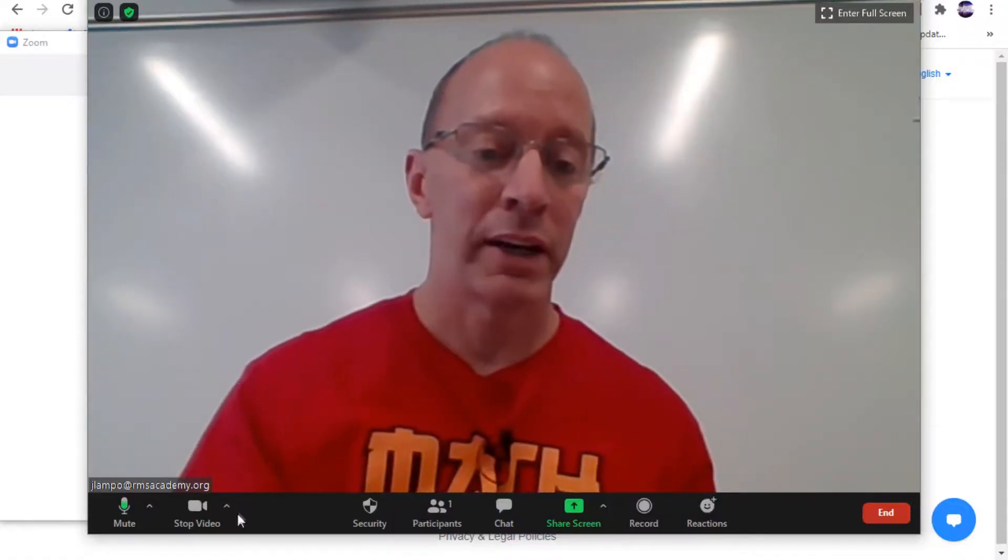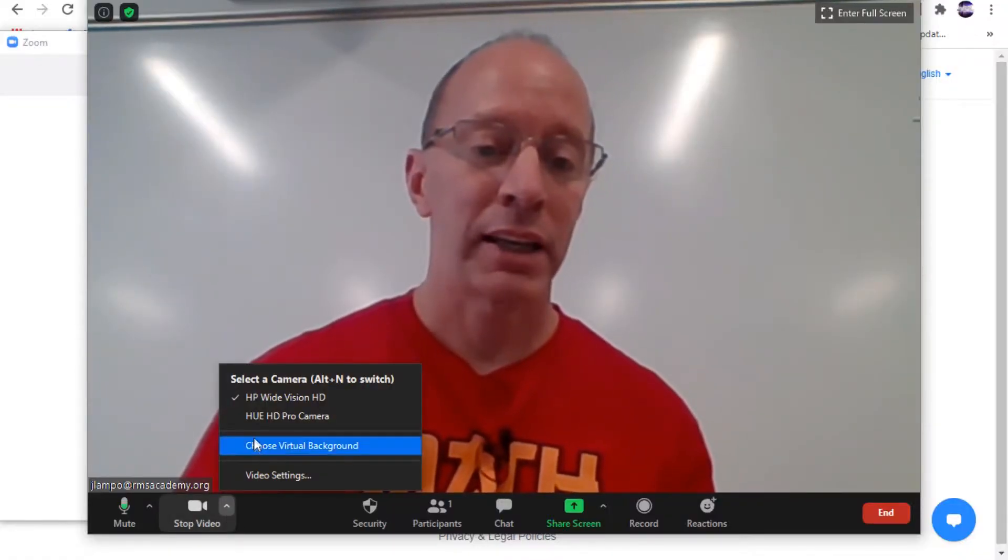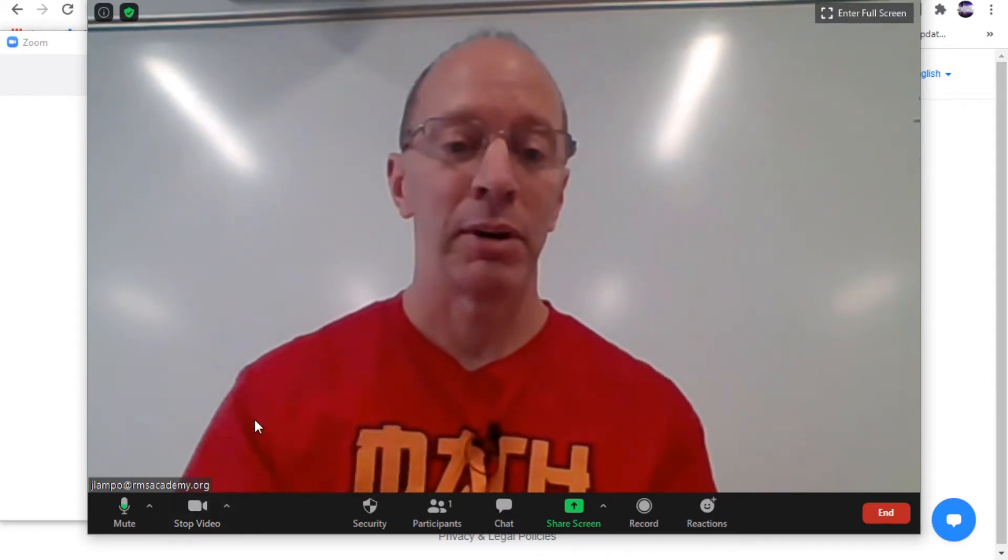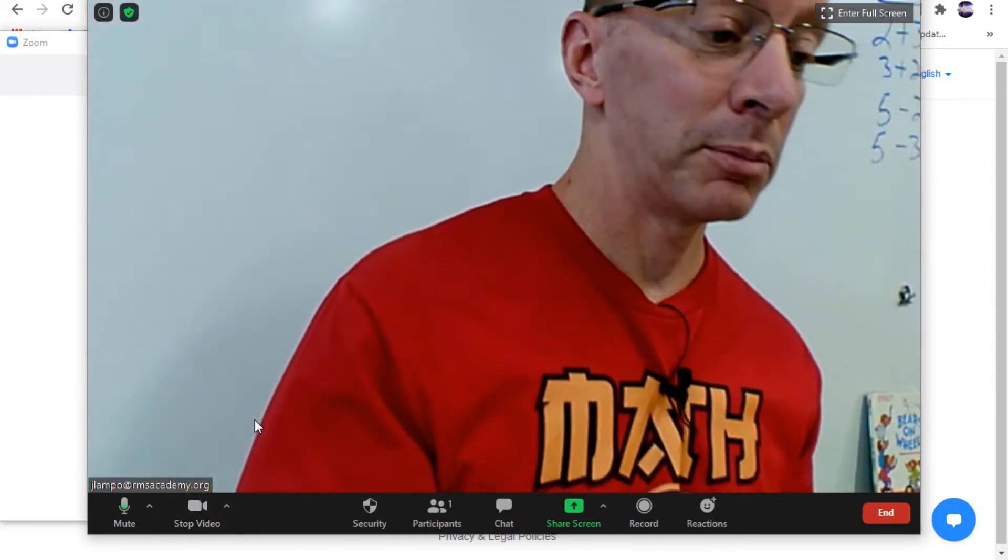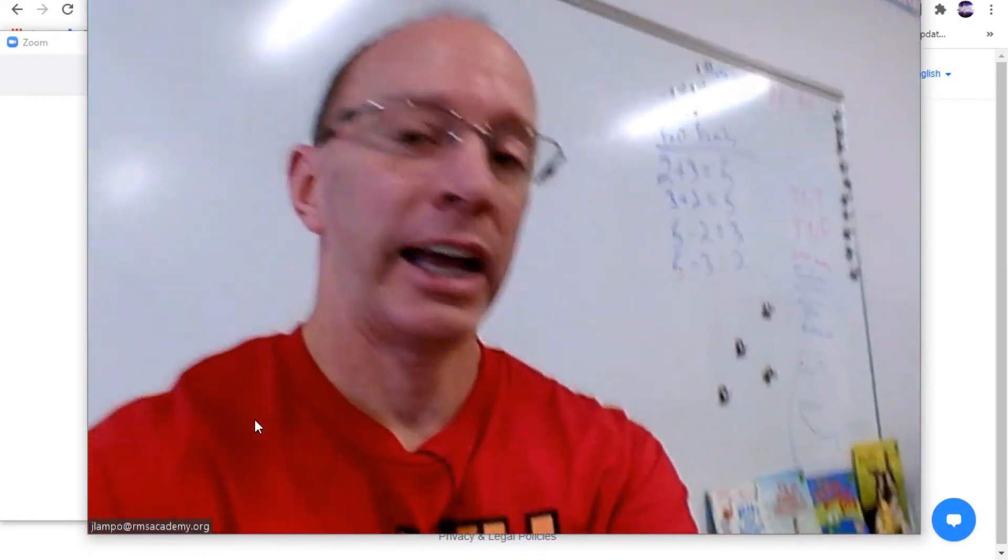So what I do is I go down below right here, and I click on the other camera. So you can see where it's the Hue Document Pro camera. You've got a different angle.